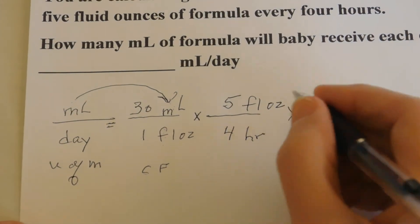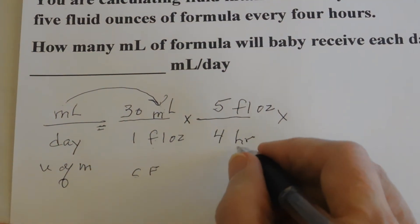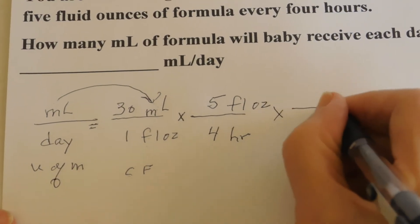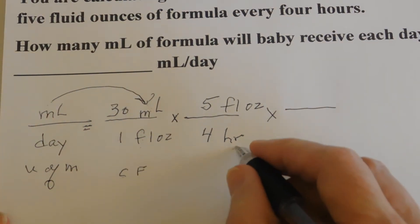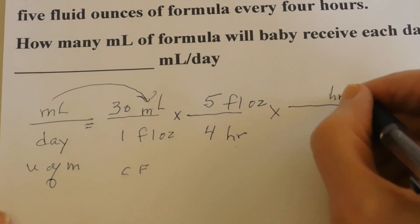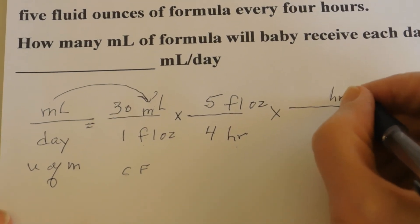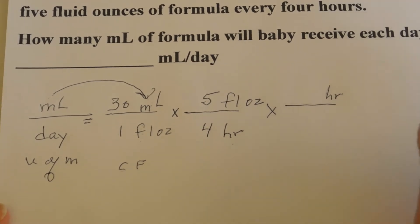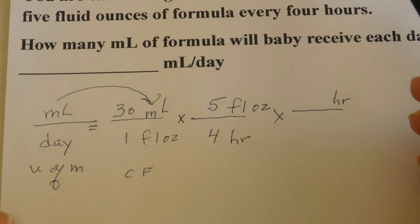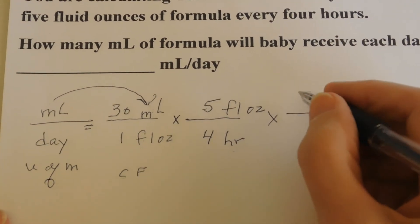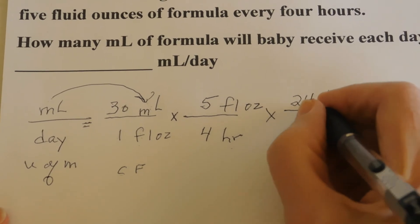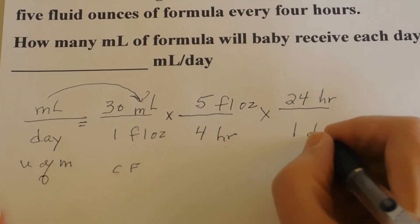We're looking for days, not hours. So we're not ready to solve yet. We draw our multiplication sign, make a line, and we know right away that hours is going to be in that numerator. What do we have with hours? We need a conversion factor. So we write our conversion factor as 24 hours in 1 day.